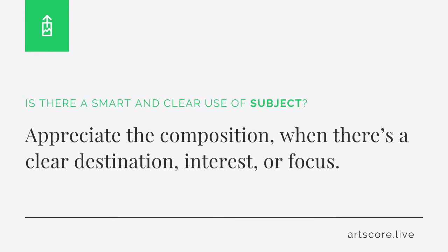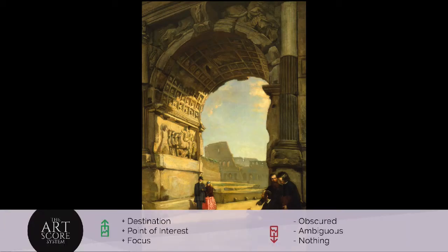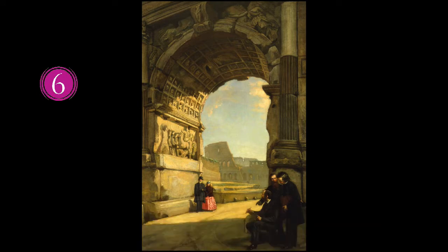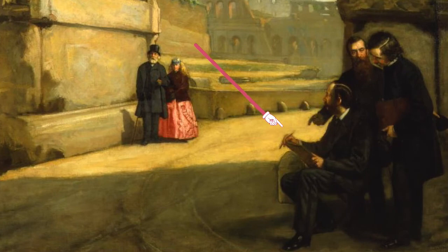Subject. Is there a smart and clear use of subject? Appreciate the composition when there's a clear destination, interest, or focus. But when the subject is obscure, ambiguous, or nothing, lower your score. I score the work 6. I feel the composition captures my attention and somehow focuses my eyes toward a clear point of interest. What's your score?